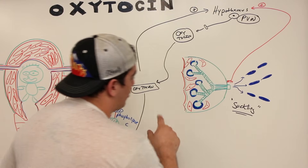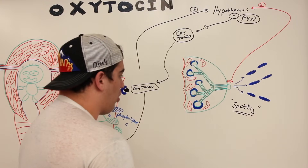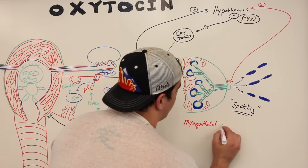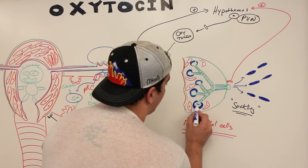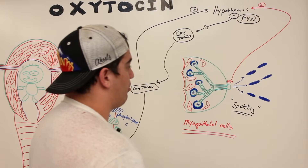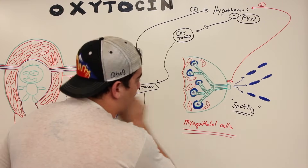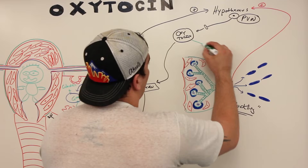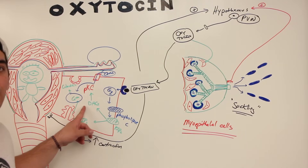Oxytocin, when released, is going to act on these red cells here called myoepithelial cells, which are surrounding these glands. We already have milk sitting within these glands — it's already been formed because prolactin has been secreted and acted on these glands to produce the milk. The milk is ready to be ejected. But oxytocin has to come and act on those myoepithelial cells through the PIP2 calcium signaling mechanism.